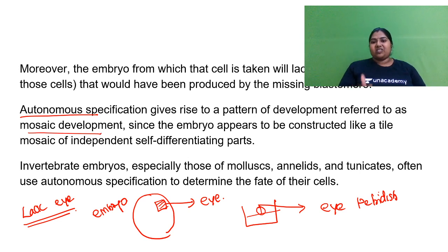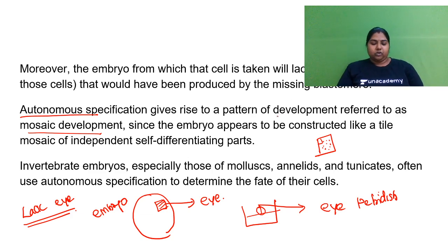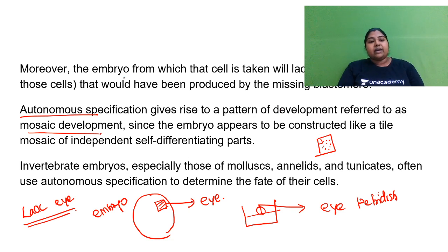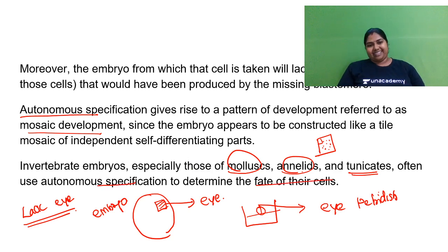Autonomous specification is called mosaic development — like a mosaic tile with differentiated patterns. The best examples are invertebrate embryos, especially mollusks, annelids, and tunicates, which use autonomous specification to determine the fate of their cells.